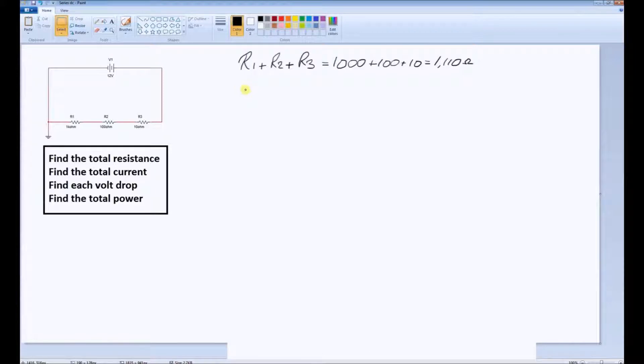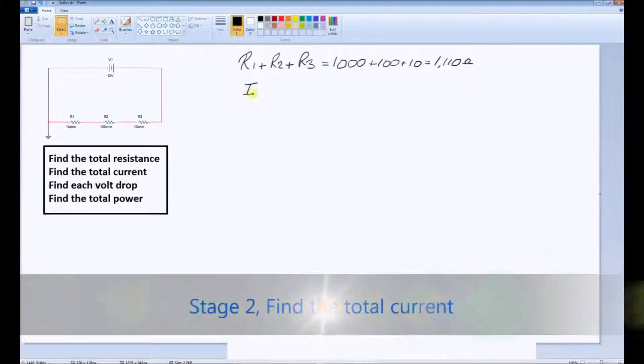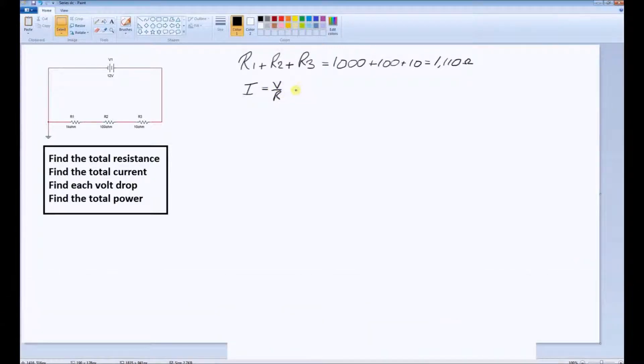The next stage is to find the total current. Ohm's law tells us that current, in any circuit, is equal to the applied voltage divided by the resistance.